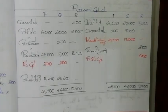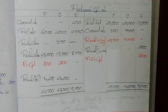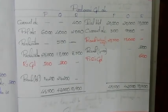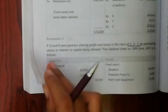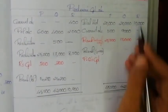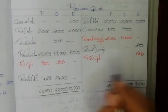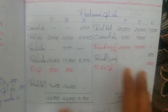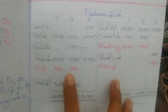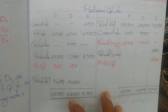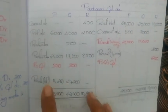R's deficiency is 900 minus 300, giving 600. This 600 is shared by solvent partners P and Q. The loss is shared in capital sharing ratio — capital ratio of P to Q is 2:1. So P bears 400 and Q bears 200 of R's deficiency. This amount is debited to P and Q's capital accounts and R's capital is cleared.